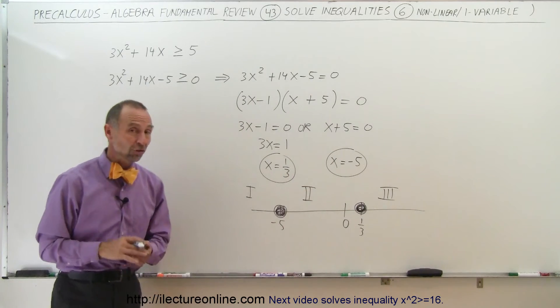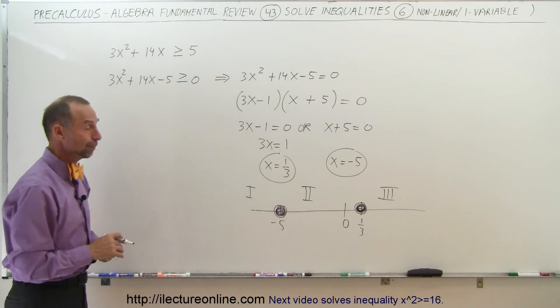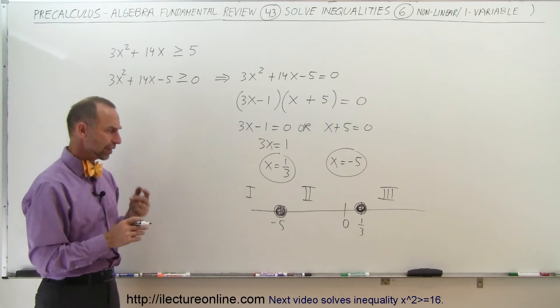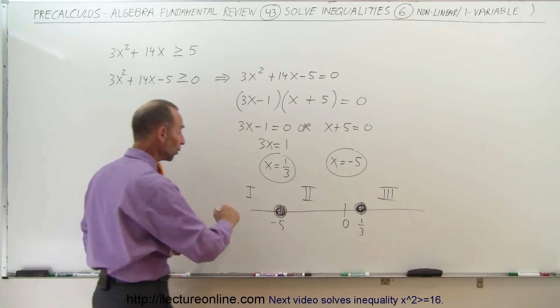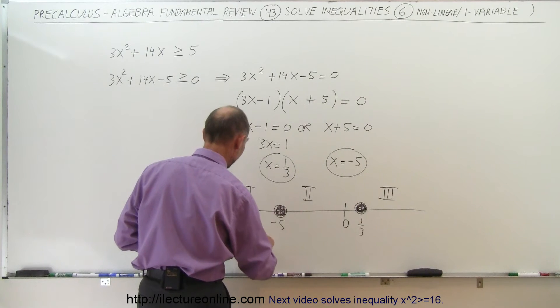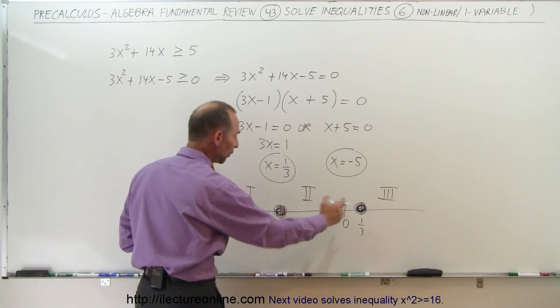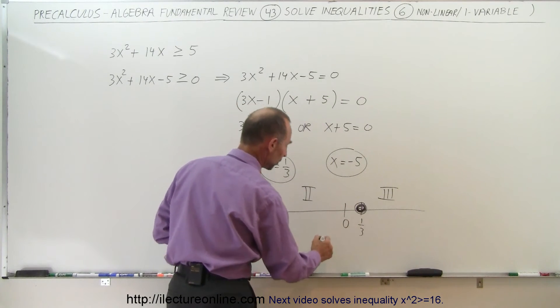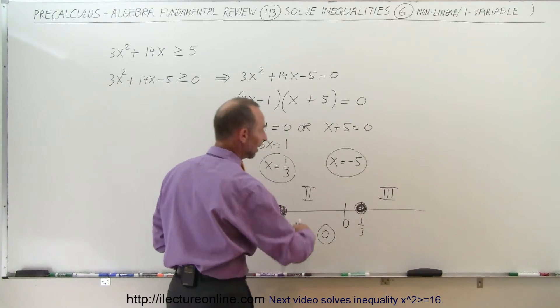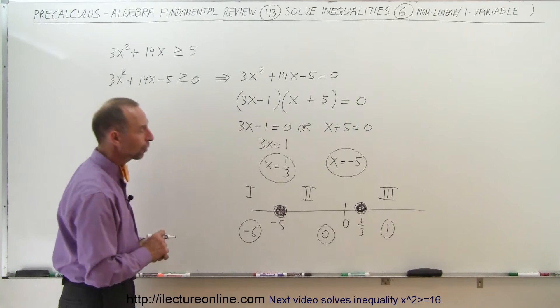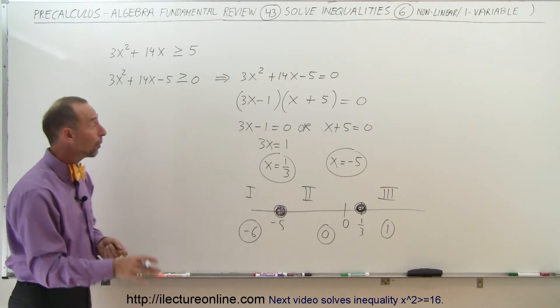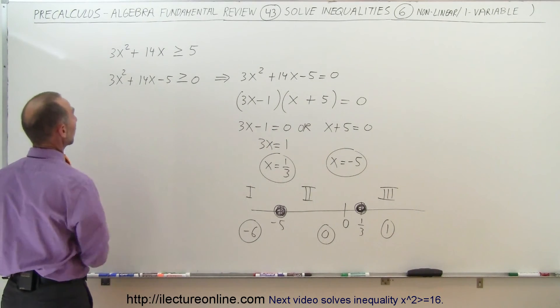One or two of those regions will satisfy this inequality. The question is, which ones? To figure that out, we're going to pick sample points from each region. One point to the left in region 1, like say negative 6, a point in the middle, since 0 is one of those points we can choose, we'll pick 0, and a point to the right, let's pick an easy one, the number 1, which is greater than 1 third. So those are three sample points we're going to plug into our inequality.